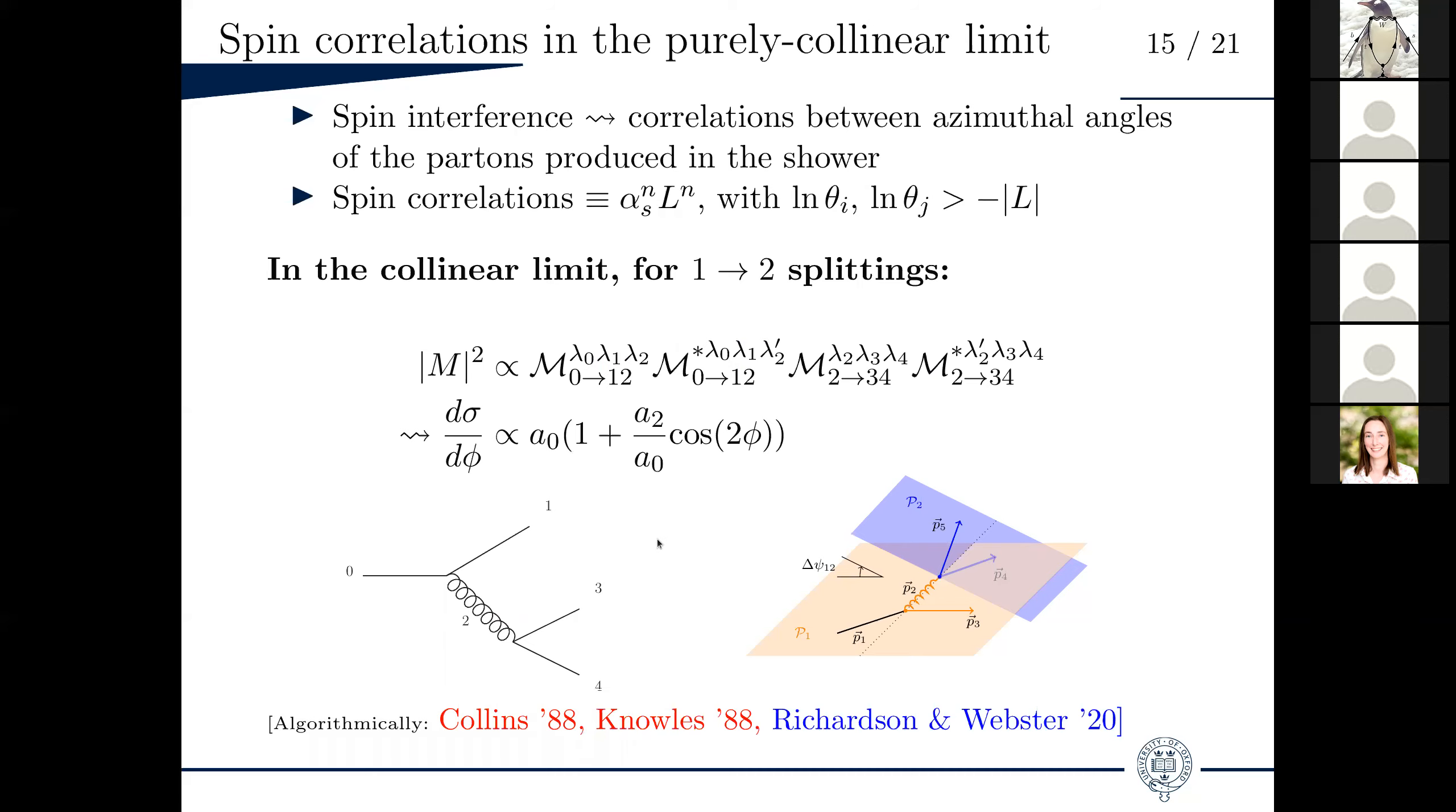So what are these spin correlations? Well, for splittings that are collinear, the matrix element factorizes in the following way. You have to sum over repeated spin indices. This gives basically a final rate, a final cross section that is proportional to one plus some factor times the cosine of two phi. Where phi is the azimuthal angle between the splitting planes 0, 1, 2 and 2, 3, 4. So if you have a gluon 2 that splits collinearly to a quark pair, for example, 3, 4, the azimuthal angles of the splitting planes will be correlated. This is an effect that comes from the spin of the gluon.